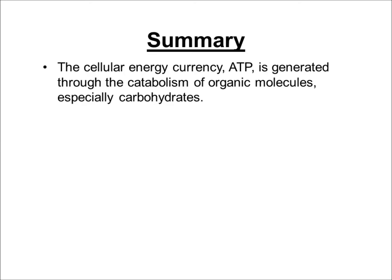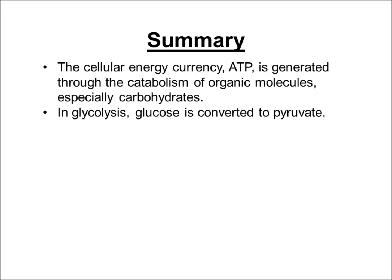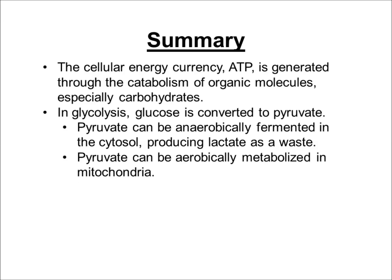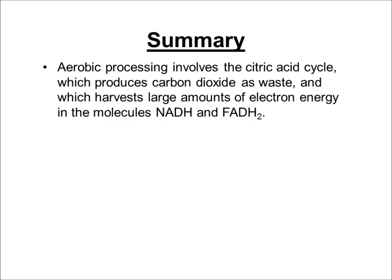To summarize: ATP is the cellular energy currency, generated through the catabolism of organic molecules like carbohydrates. In glycolysis — the first step — glucose is converted into pyruvate. Depending on oxygen availability, that pyruvate can either be anaerobically fermented in the cytosol to produce lactate as waste, or aerobically metabolized in the mitochondria. When we go that aerobic route, the pyruvate is oxidized and fed into the citric acid cycle, which produces carbon dioxide as waste, and large amounts of electron energy are harvested in NADH and FADH2.